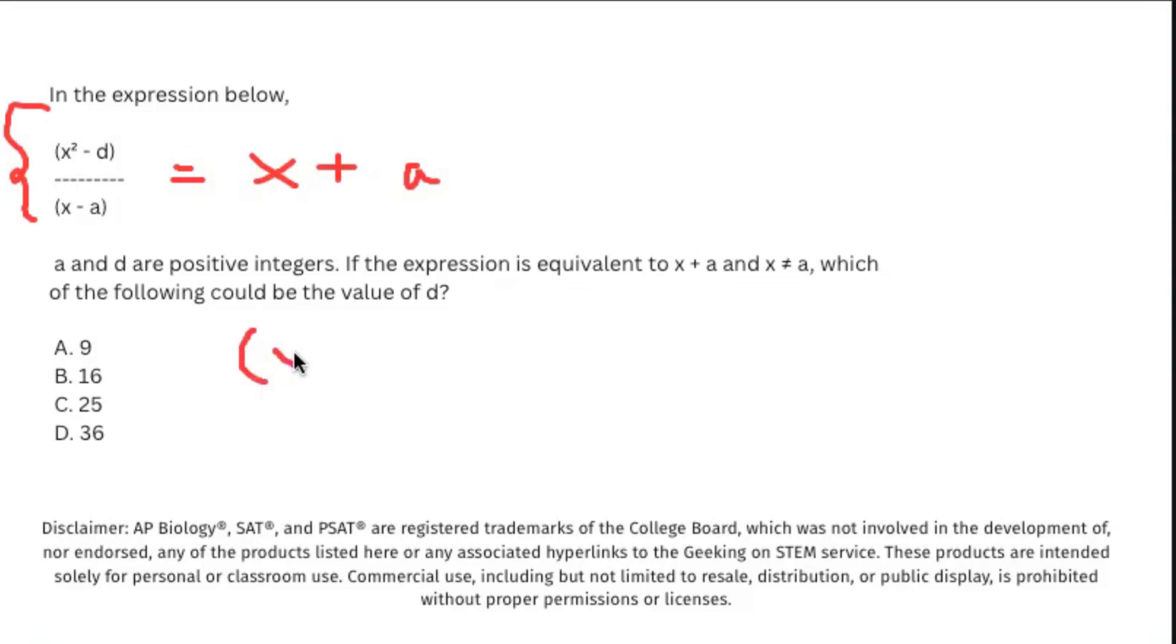So we can say that (x - a) divided by (x + a), all divided by (x - a), is also the same thing as saying x plus a. The way you can think about this is if you go ahead and cross out the (x - a)'s, x plus a equals x plus a. So they're the same thing.